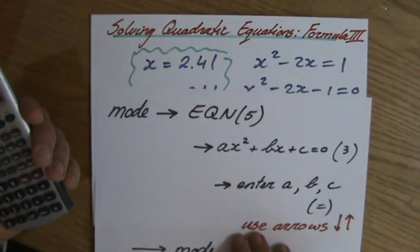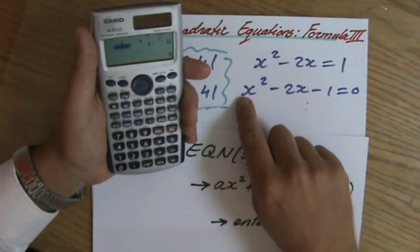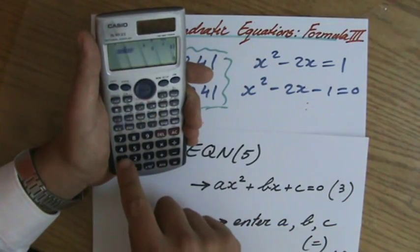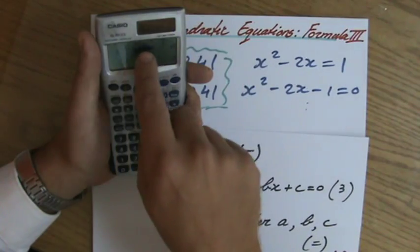Okay. So the values of A, B, and C. So if I go to the question, what is the value of A? That is 1. So I press a 1, equals.